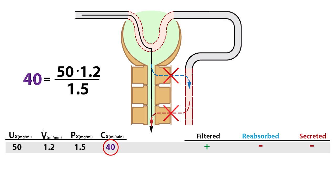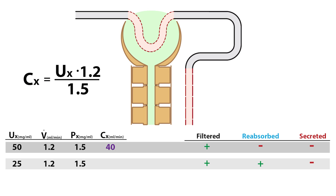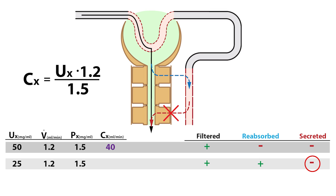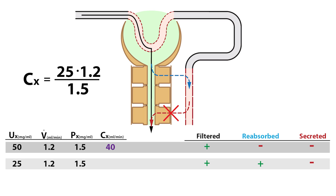What will the clearance rate be if substance X is freely filtered and about 50 percent of it is reabsorbed but not secreted? The plasma concentration and urine flow rate remain unchanged at 1.5 mg/mL and 1.2 mL/min respectively. However, the urine concentration will now be half, or 25 mg/mL. With these values, the clearance rate will be 20 mL/min — a 50 percent decrease compared to a substance that is only filtered.